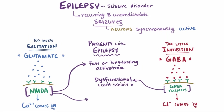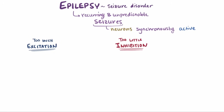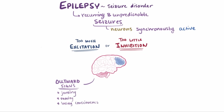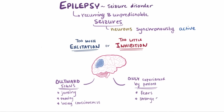In addition to potentially having a primary genetic cause, these receptors and ion channels might be affected by all sorts of things like brain tumors, brain injury, or infection. Whether it's a decrease in inhibition or an increase in activation, when groups of neurons start firing simultaneously over and over, it's often noticed by others as obvious outward signs like jerking, moving, and losing consciousness, but can also be subjective experiences only noticed by the person experiencing it, like fears or strange smells. It all depends on which neurons in the brain are affected.